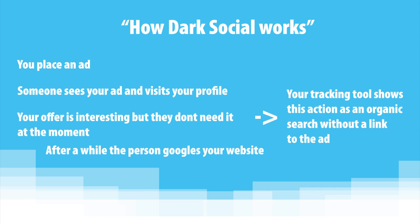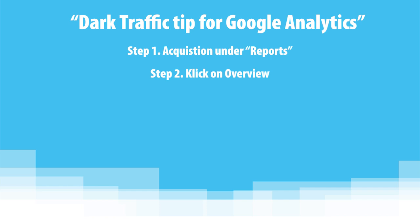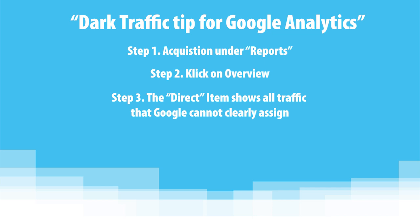Even if this traffic cannot be tracked completely, you can at least understand to what extent the phenomenon dark social plays a role in your content. Google Analytics, for example, offers the acquisition section under reports. There you can click on overview to access the newly generated traffic, where the tool shows how visitors reach your website. The direct item is particularly interesting in this context — this is where all traffic that Google cannot clearly assign ends up. It is therefore an obvious conclusion that a large proportion of this is dark traffic.